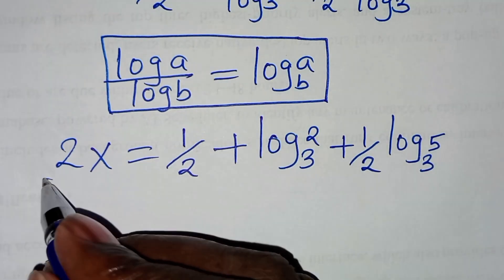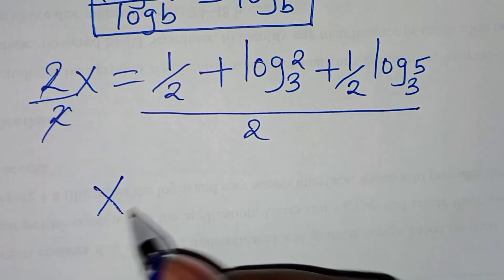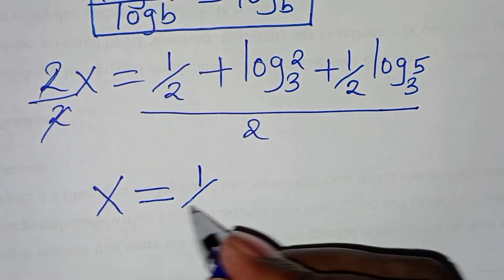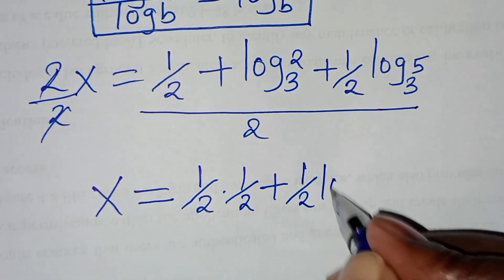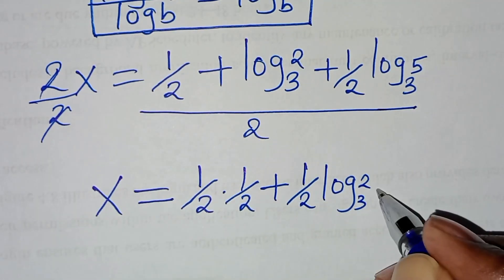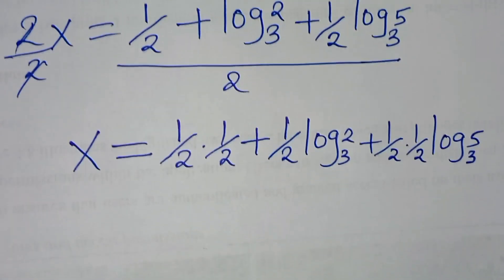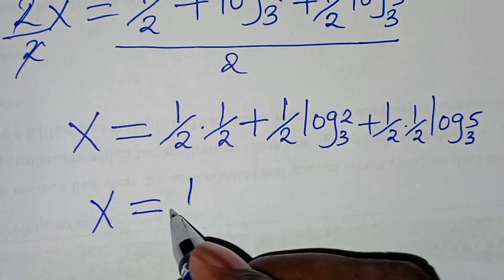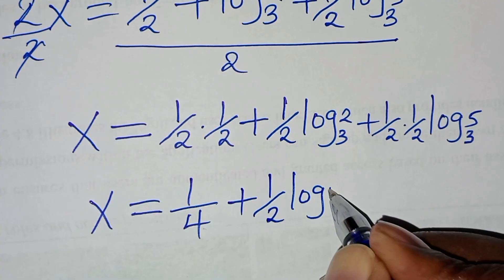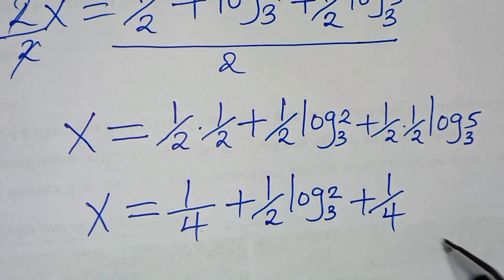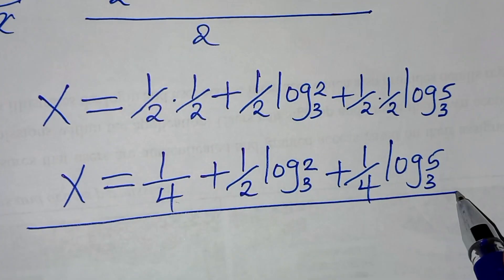Now we divide both sides by 2. So the value of x is equal to one half times one half, then plus one half times log base 3 of 2, then plus one half times one half times log base 3 of 5. This implies that the value of x will be equal to 1 over 4, plus one half log base 3 of 2, then plus 1 over 4 times log base 3 of 5.